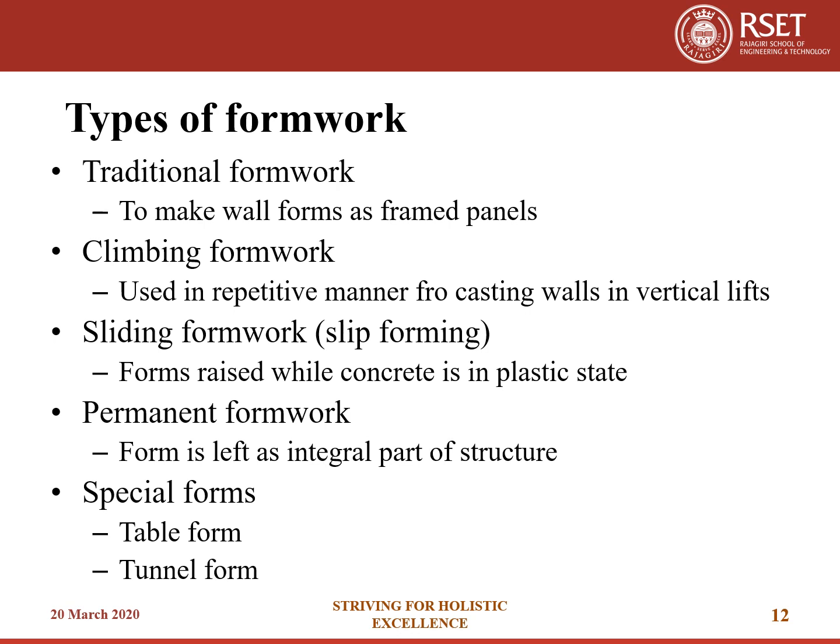In traditional formwork, it consists of standard framed panels tied together over their back with horizontal members called walling. Walling resists the horizontal force of the wet concrete. The steel reinforcement cage is placed before the other side of the formwork is erected and fixed. Climbing formwork involves casting walls using a climbing method, either manual or crane-assisted, employing a common set of forms used repetitively for casting walls in vertical lifts.